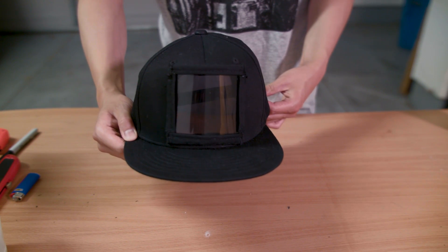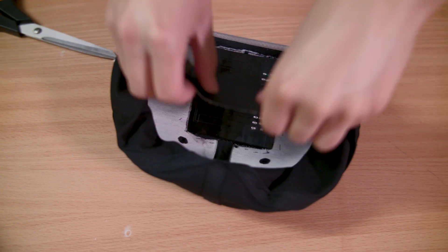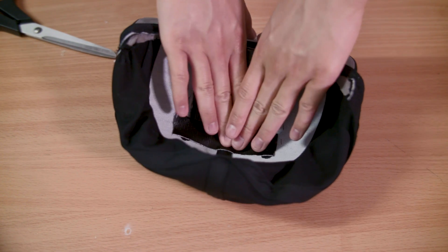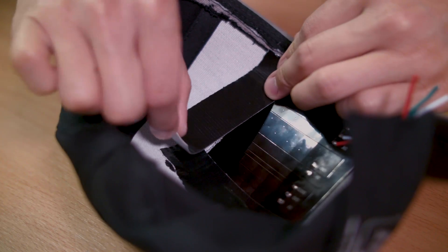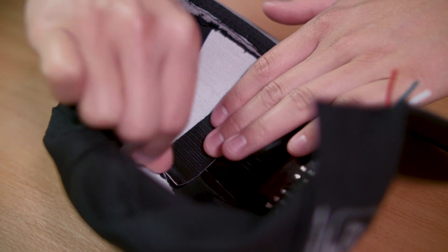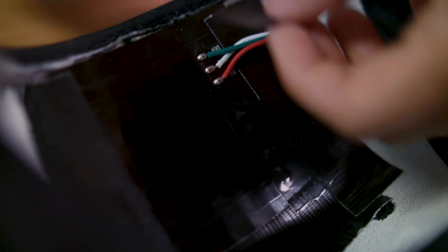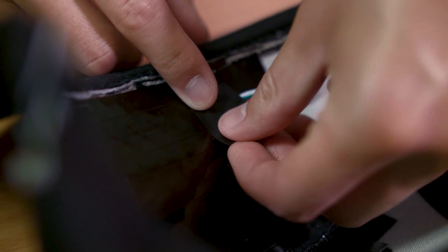And now for some finishing touches. We took some Gorilla Tape and simply taped the LED matrix to the inside of our hat after carefully centering it behind the opening. You'll also want to cover up some of the unneeded contacts with electrical tape.